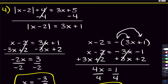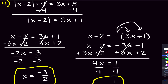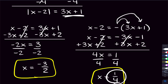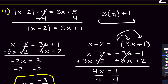Here's the fast way to check. When the absolute value is isolated, the expression on the right — 3x plus 1 — cannot be negative. Plug in x equals 1 over 4: 3 times 1/4 plus 1 is a positive number, so that solution works.